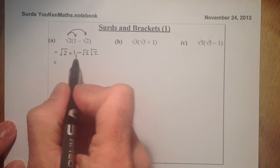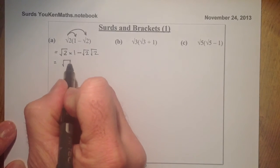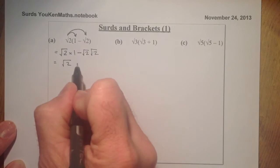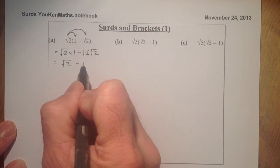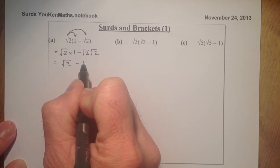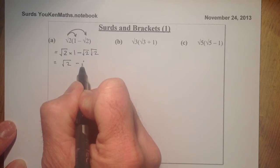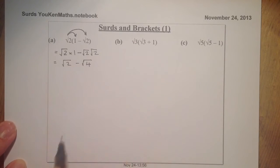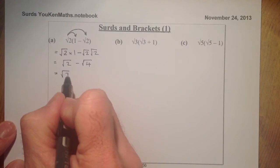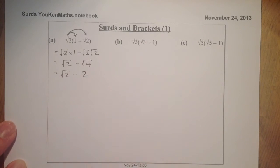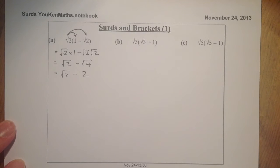When I gather them together, root 2 times 1 is root 2. Root 2 times root 2 — I'm going to show that as root 4 like we've done before. From there, that gives me a simplified answer of root 2 minus 2. And I can't simplify that any further — that's my final answer.